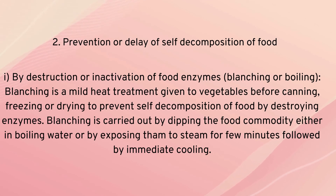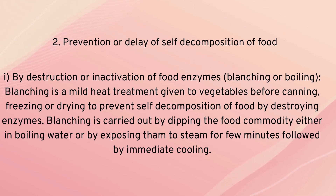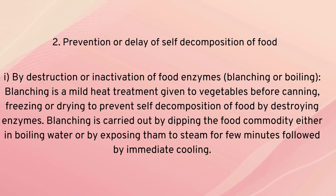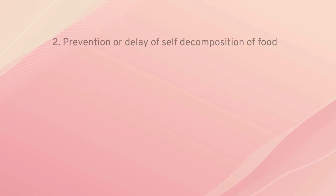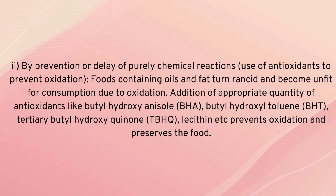Prevention or delay of self-decomposition of food is achieved first by restriction or inactivation of food enzymes through blanching or boiling. Blanching is a mild heat treatment given to vegetables before canning, freezing, or drying food, to prevent self-decomposition by destroying enzymes. Blanching is carried out by dipping the food commodity in boiling water or by exposing it to steam for a few minutes, followed by immediate cooling.